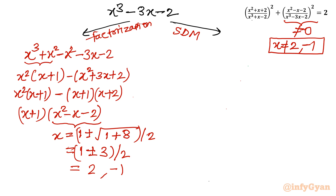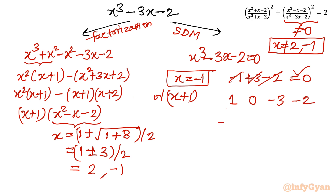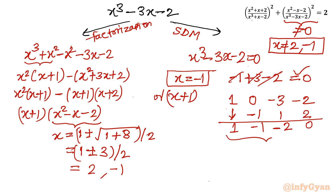Method 2 (SDM) for x³ - 3x - 2 = 0: putting x = -1 gives -1 + 3 - 2 = 0, so x = -1 is a root. Writing coefficients 1, 0, -3, -2 and performing synthetic division with -1 yields the quadratic x² - x - 2 = 0, giving x = 2 and x = -1. So x³ - 3x - 2 = (x + 1)(x² - x - 2), consistent with our first method.